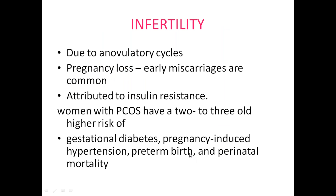PCOS patients usually have fertility issues due to anovulatory cycles — with no ovulation, the chance of conception is reduced. Even if pregnancy occurs, early miscarriages are more common, attributed to insulin resistance. Women with PCOS have a two to three-fold higher risk of gestational diabetes, pregnancy-induced hypertension, preterm birth, and perinatal mortality.